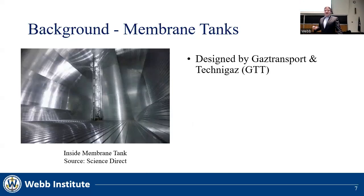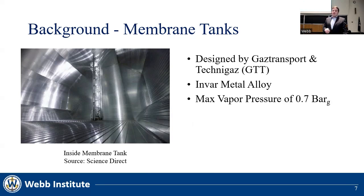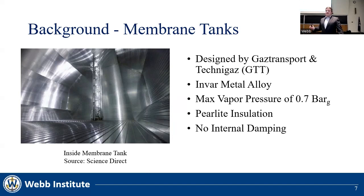Membrane tanks are designed by GTT, or Gaz Transport and Technigas, and utilize an invar alloy in panels to minimize thermal expansion. They have a max vapor pressure of 0.7 bar gauge and utilize perlite insulation to minimize heat ingress and boil-off. Oil tankers utilize similar tanks; however, they include structures such as baffles to prevent damage from sloshing, but membrane tanks lack internal dampening structures due to the cryogenic temperatures.